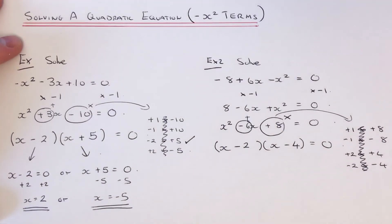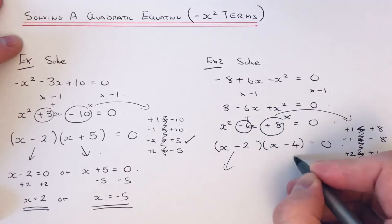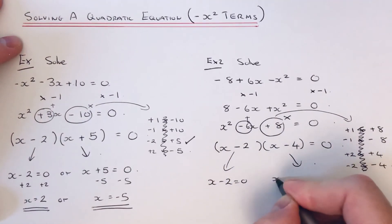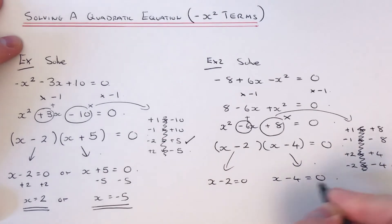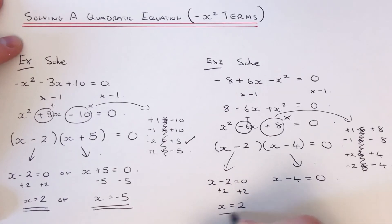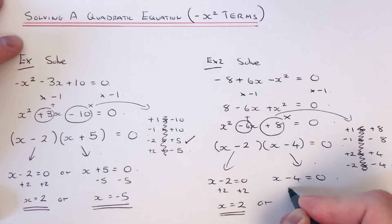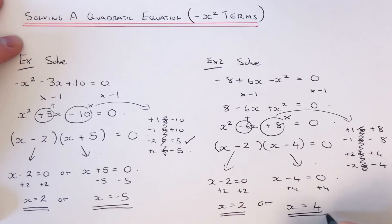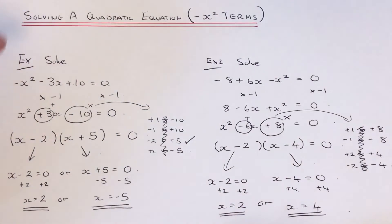So we've got x minus 2, x minus 4. So again, we just split it into two separate equations. So if I solve the first one by adding 2 to both sides, so this will give me x equals 2. And if I solve the second one by adding 4, now I add 4, it's 4, and that's the second solution.